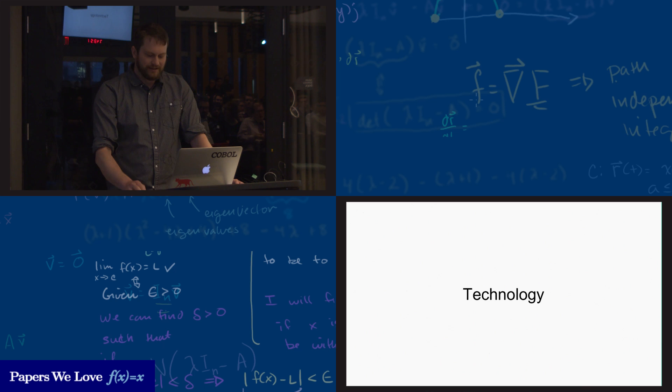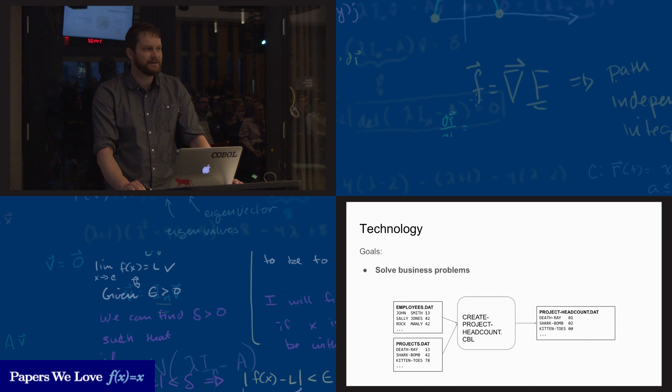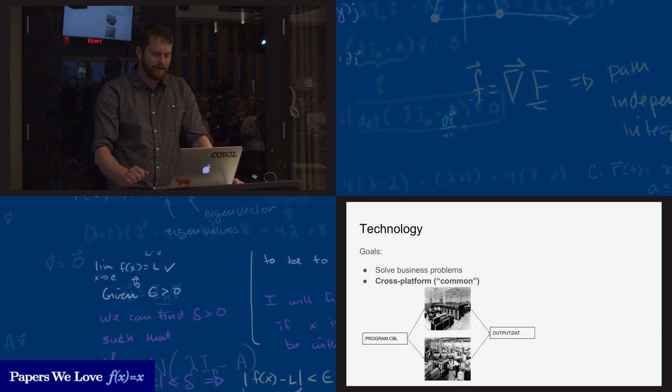Let's talk about COBOL a little bit as a technology. In order to understand COBOL, it helps to understand the goals that led to its creation. First of all, there was a desire to solve business problems. At that time, business problems were mostly reading records in from a few files, processing those records, and then writing some more records out to another file. You might have something that correlated some employee names to some projects and gave you a head count so that you could look and say, oh, nobody's working on the kitten toes project, let's cut that one.